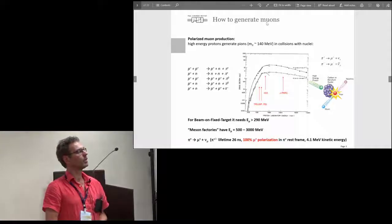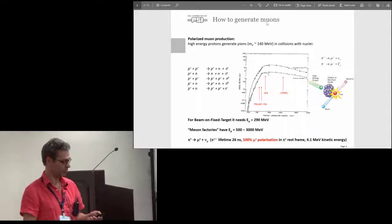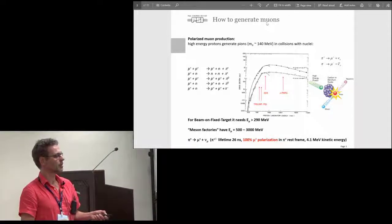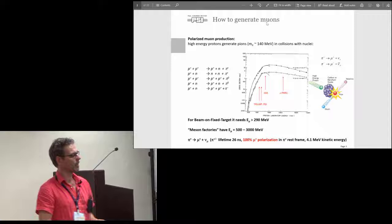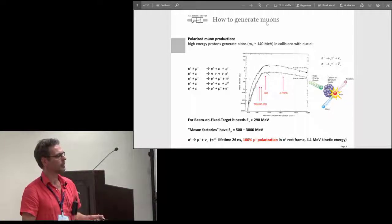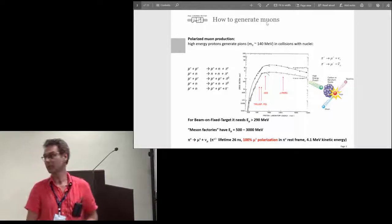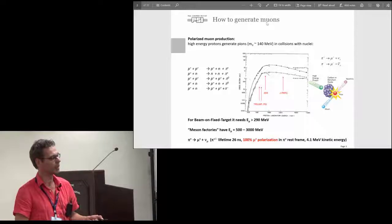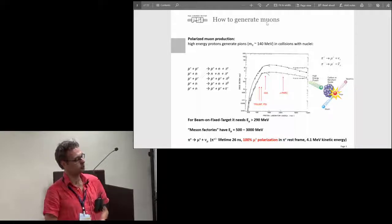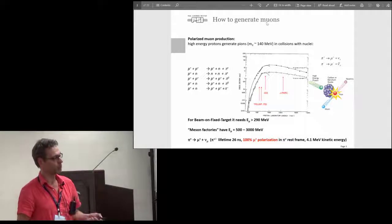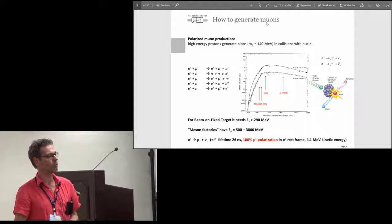You need a proton accelerator to generate pions and use them. The pions decay into the muons and the lifetime of the pions is about 26 nanoseconds. It's a parity violated decay so the pion, a spin zero particle, decays into spin one-half particles. The helicity of the neutrino is fixed because of parity violation, so the spin of the muon has to point opposite to its momentum in this two-body decay, which gives you a hundred percent polarization. In the rest frame of the pion, the energy of the muon would be around 4 MeV.